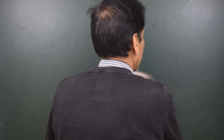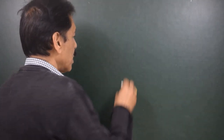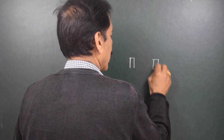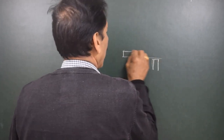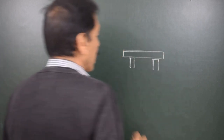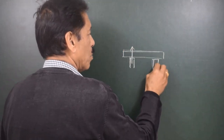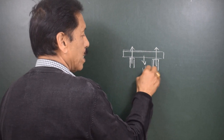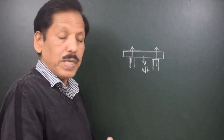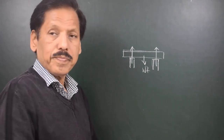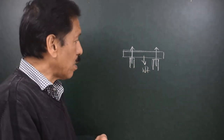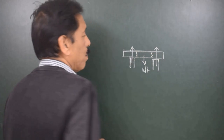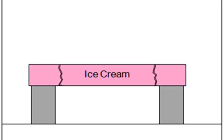Now let us look at an example where there are two supports and we have placed a beam on top of them. There is an upward reaction at each support, and we can say that for all practical purposes the weight is acting from the center of gravity of the beam. The weight of the beam and the reaction forces are not acting in one line, so there is a tendency to shear the beam along a plane perpendicular to the main axis of the beam.